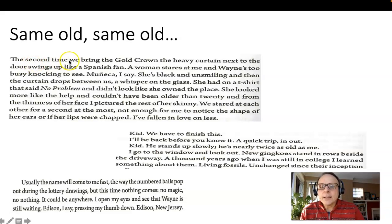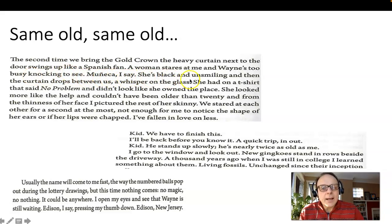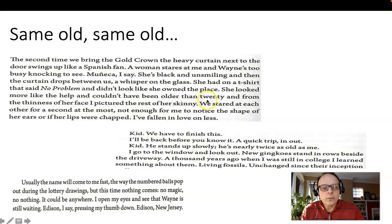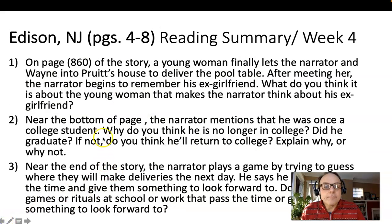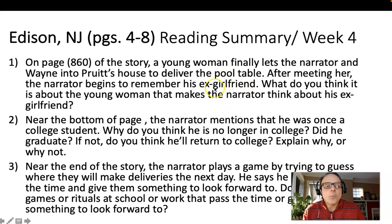Let me read through this passage from around page 860. 'The second time we bring the gold crown' — this is the big pool table they're delivering — 'the heavy curtain next to the door swings up like a Spanish fan. A woman stares at me and Wayne's too busy knocking to see. Muñeca, I say. She's black and unsmiling, and then the curtain drops between us. A whisper on the glass. She had on a t-shirt that said No Problem and did not look like she owned the place. She looked more like the help and couldn't have been older than 20. From the thinness of her face I picture the rest of her skinny. We stared at each other for a second at most — not even enough for me to notice the shape of her ears or whether her lips were chapped. I've fallen in love on less.' They finally get into this house. Remember last week we said it seemed like somebody in there was laughing at them, not letting them make this delivery — almost like somebody was playing with them.